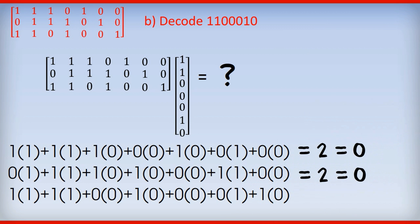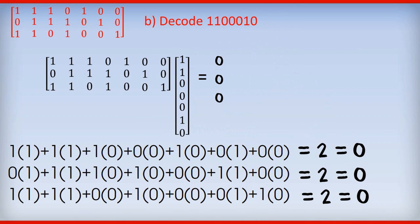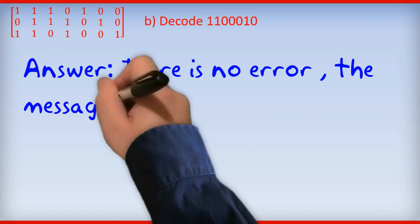So let's have a look and see what happens. We get these three simultaneous equations. And they all total 2. And 2 is even, so they're all 0. So this tells us that the message has come through without any problems, there's no errors. And so the answer is, there is no error. The message is 1, 1, 0, 0.